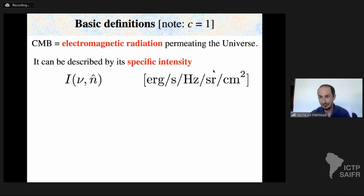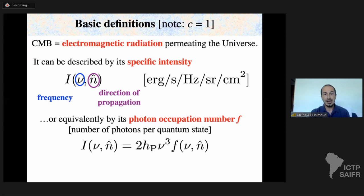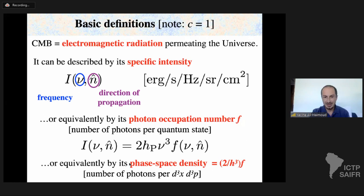What is the cosmic microwave background? First and foremost, it is electromagnetic radiation that permeates the universe. We can describe it by its specific intensity I, which has dimensions of energy per unit time per unit frequency per unit solid angle per unit area, and depends on the frequency and direction of propagation of photons. Equivalently, we can describe it by its photon occupation number f, related to the specific intensity by I = 2 h_p ν³ f.